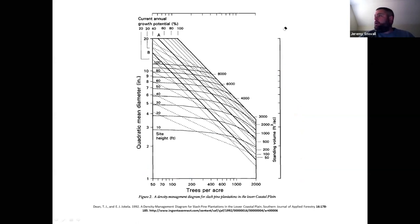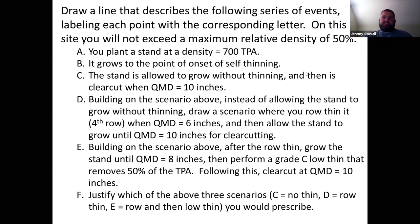This is the scenario we're going to use. This is not written out in your lab, so I'll leave it up here on the screen for you for a minute. What you're going to do with this diagram is we're going to work on three different possible scenarios, and we will compare the three possible scenarios. They will all start with a stand planted at 700 trees per acre, and none of them are going to exceed a relative density of 50%, and I will show you what that means in a moment.